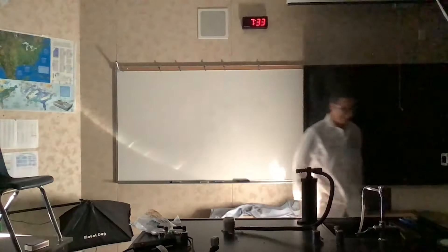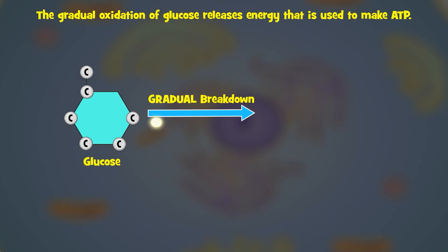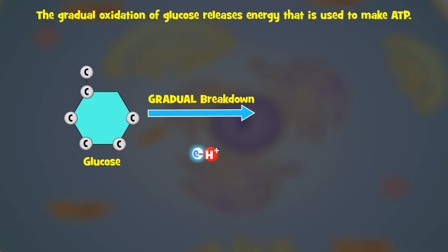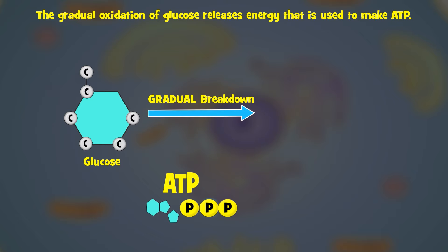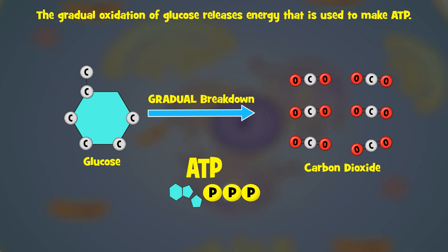Nice. That is a lot of energy in sugar. But we don't want to release it like that in our bodies, because then we would explode. So in respiration, the energy is released gradually through a bunch of steps in which glucose is broken down. Each step releases a little bit of energy as electrons and hydrogens are stripped from glucose, a process known as oxidation. The oxidation of glucose releases the energy needed to make ATP gradually — not like that explosion.